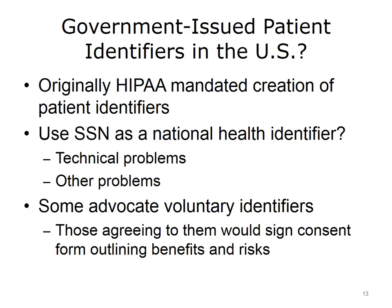Should there be government-issued patient identifiers in the United States? This was actually mandated by the original HIPAA legislation in the mid-1990s, but there was tremendous political pushback and that requirement was postponed and eventually abandoned. Some have suggested we already have a national identifier in the U.S. — the Social Security Number. The Veterans Administration did use the Social Security Number as its patient record number for many years. However, the Social Security Number is a poor identifier, so even if we desired a national health identifier, it should probably not be the Social Security Number.